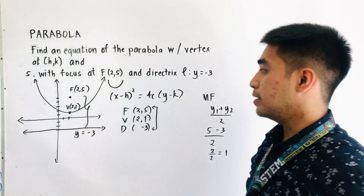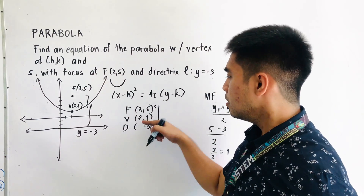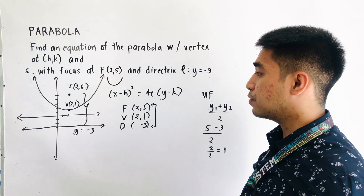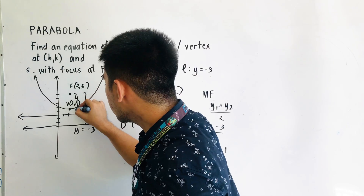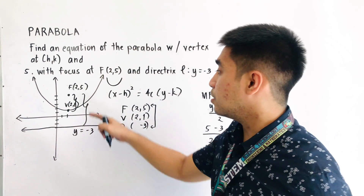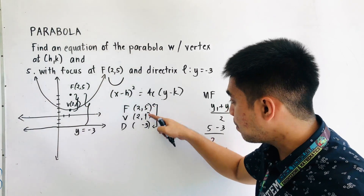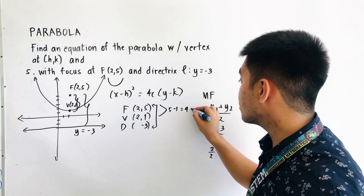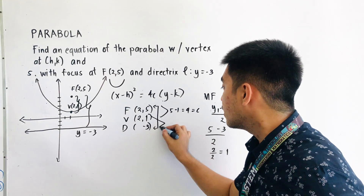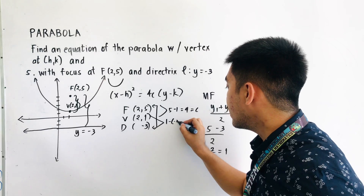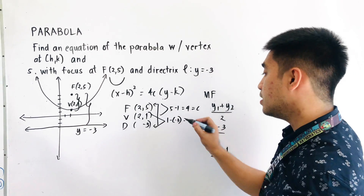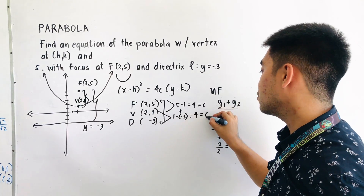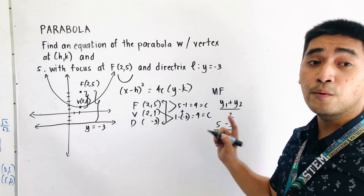Now we need to find the value of c. From the focus going to the vertex, that is the value of c. The focus y-coordinate is 5 and the vertex y-coordinate is 1, so 5 minus 1 equals 4, and that is c. Also, 1 minus negative 3 equals 1 plus 3, which equals 4. That confirms c equals 4.